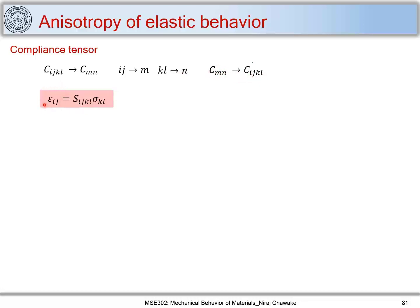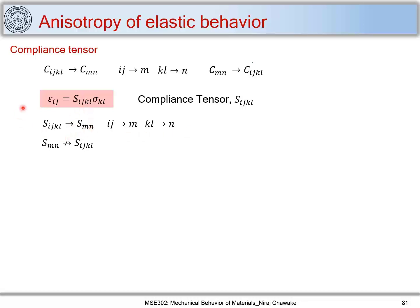We have the relation: strain tensor εᵢⱼ = Sᵢⱼₖₗ σₖₗ, where Sᵢⱼₖₗ is the compliance tensor. Similarly, in Voigt notation we write it as S_MN where ij → M and kl → N. However, when converting back from Voigt notation S_MN to tensorial notation Sᵢⱼₖₗ, it is not equal — unlike the stiffness matrix, you cannot directly convert S_MN back to Sᵢⱼₖₗ.